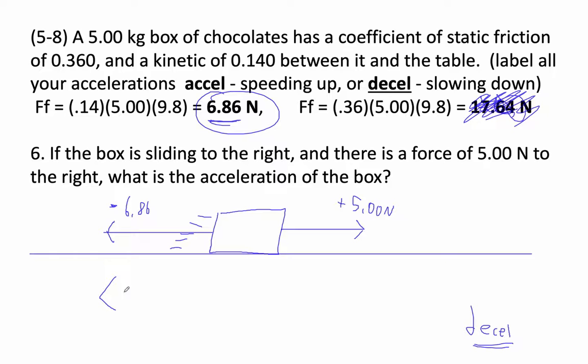So I've got 5 newtons minus 6.86 is equal to, and the mass is 5, and then the acceleration is what we're going to find. So 5 minus 6.86 is negative 1.86 equals 5a, and then we divide by 5. So divide by 5, and I get that the acceleration is equal to negative 0.372 meters per second squared.